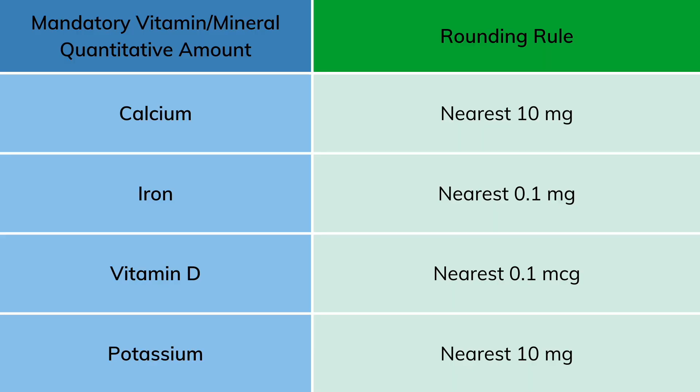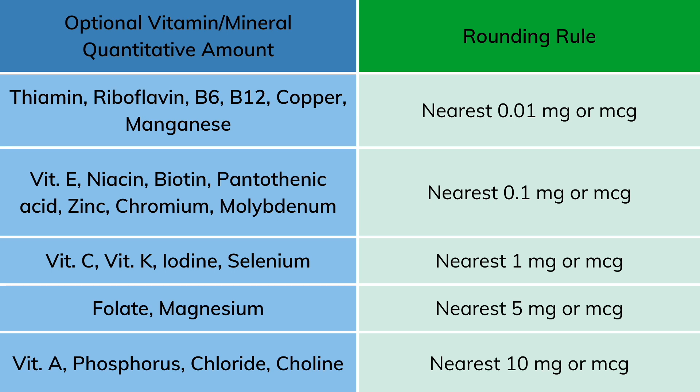But wait, there's still more. When the FDA updated their rules in 2016, they made a requirement to show the amount in milligrams or micrograms of the mandatory vitamins and minerals on the panel. And as you might have guessed, each of those vitamins and minerals has their own specific rounding rule — we'll take a look at that here, and it's also linked in the article in the description. As you can see in this chart, calcium is rounded to the nearest 10 milligrams, while iron is rounded to the nearest 0.1 milligram, and vitamin D is rounded to the nearest 0.1 microgram. It's also important to note that this rule applies to any optional vitamins and minerals that you include on your panel.